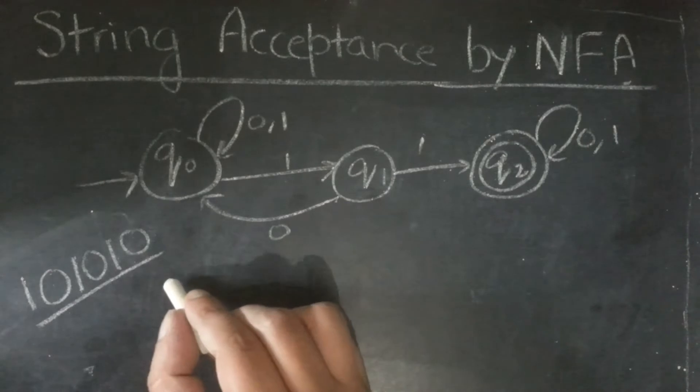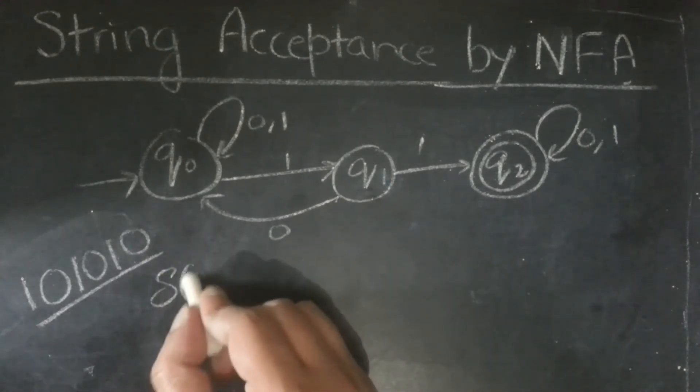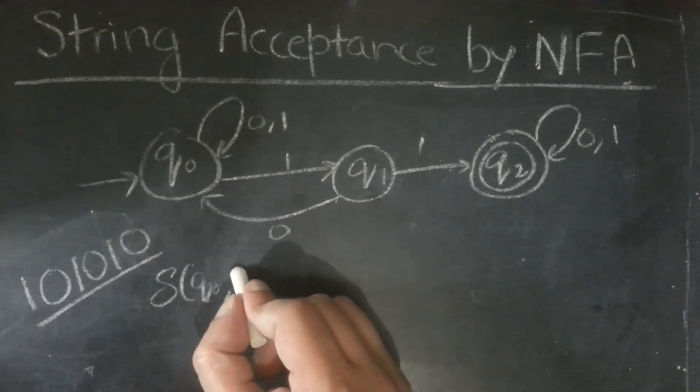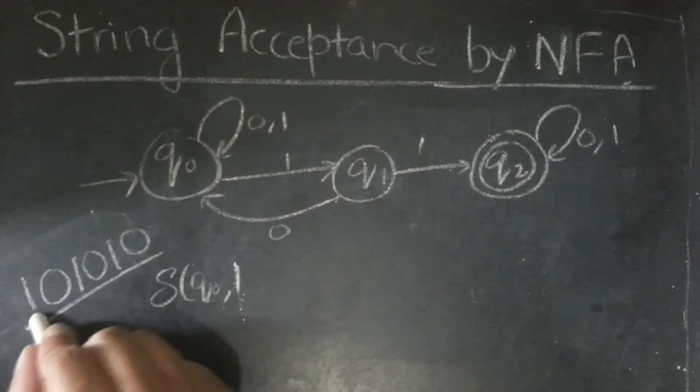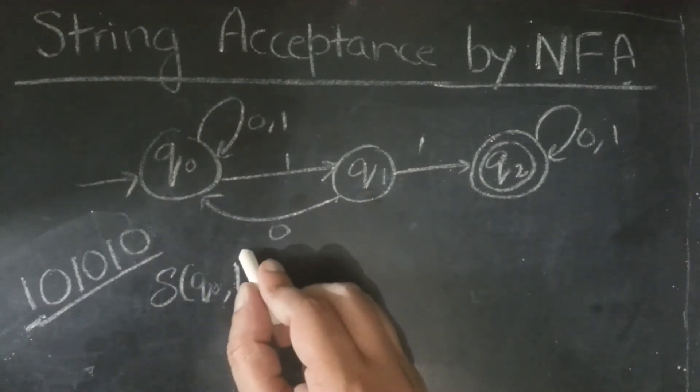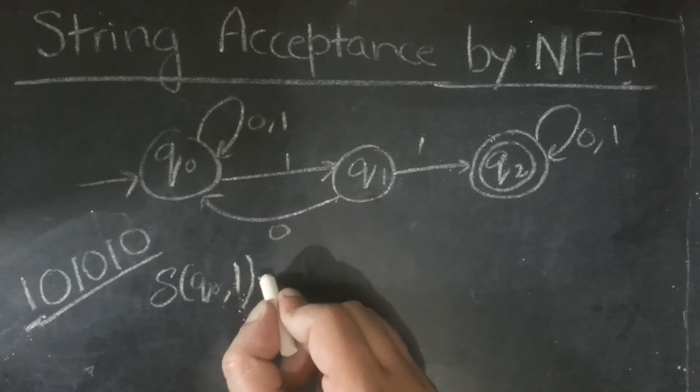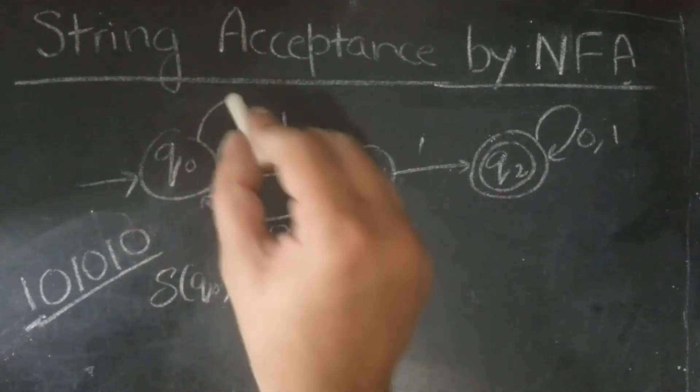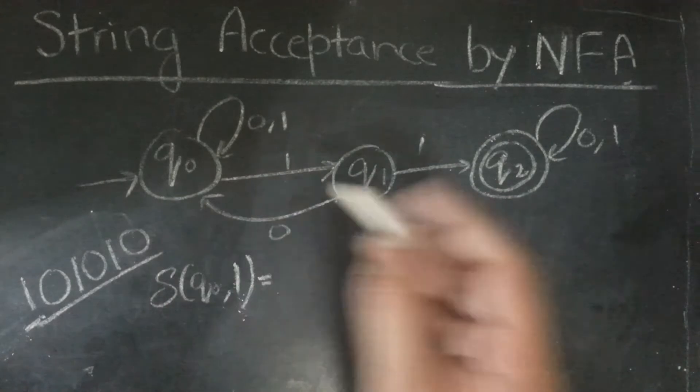So first we will do is, on q0, we will give 1 since it is the first input. And that will take us, on q0 we will give 1, that will take us both to q0 and q1.